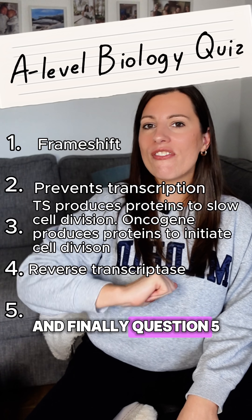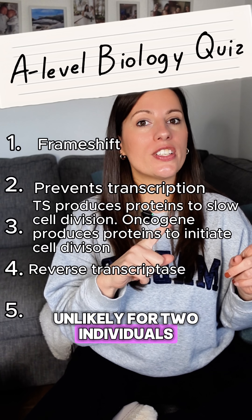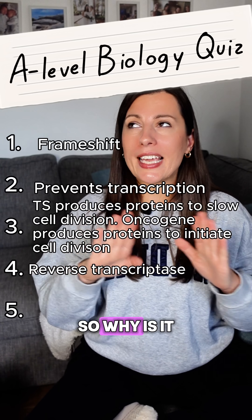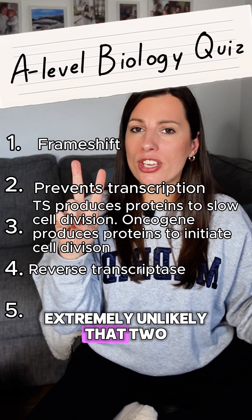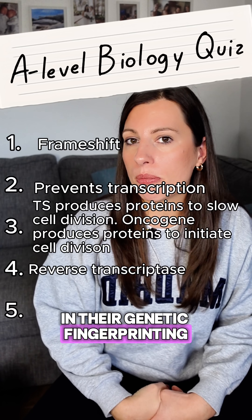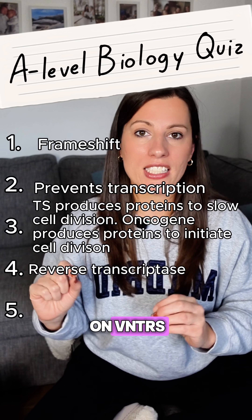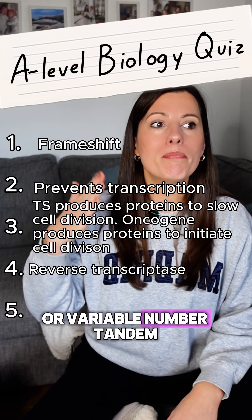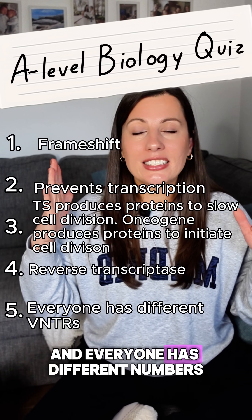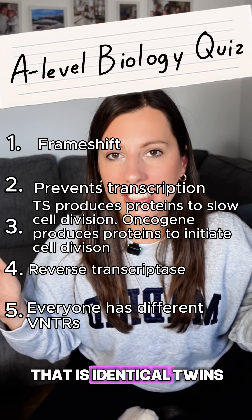Finally, question five: why is it extremely unlikely for two individuals to have exactly the same banding positions in their genetic fingerprinting? The answer is that genetic fingerprinting is based on VNTRs, or variable number tandem repeats, in your DNA. Everyone has different numbers and different lengths of VNTRs — the only exception being identical twins.